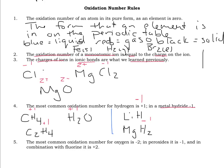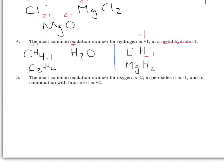Moving on to oxygen: oxygen also has a common oxidation number. Going back to our example of water, we know the oxidation numbers of both elements — hydrogen is plus one, and the common oxidation number for oxygen is minus two. So with a few exceptions, oxygen is generally minus two. In water, minus two. In methanol, which has a carbon, four hydrogens, and an oxygen, the oxidation number for all the hydrogens is plus one, and the oxygen is minus two. We'll figure out later how to deal with the carbon.